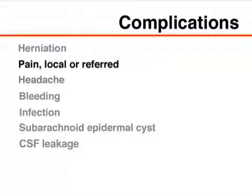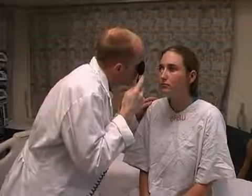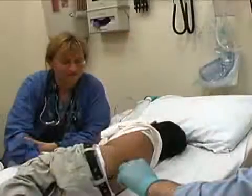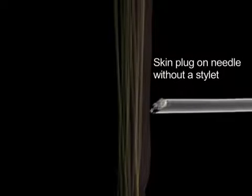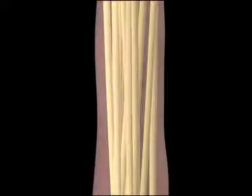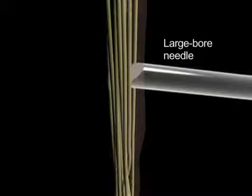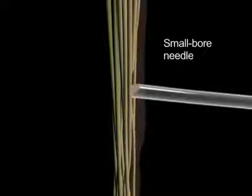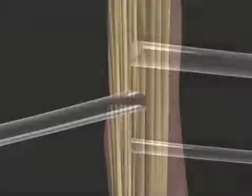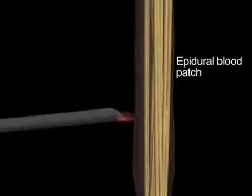Lumbar puncture has numerous possible complications, including cerebellar herniation, referred pain, headache, bleeding, infection, the formation of a subarachnoid epidermal cyst, and leakage of spinal fluid. You can avoid many of these complications by conducting a careful assessment of the patient before the procedure, including a thorough neurologic examination and retinoscopy, and monitoring the patient throughout. A subarachnoid epidermal cyst occurs when a skin plug is introduced into the subarachnoid space; the standard use of a needle with a stylet will avoid this complication. Leakage of spinal fluid can occur at the puncture site. A large-bore spinal needle is more likely than a smaller-bore needle to produce a leak, so the latter should be used whenever possible. In the case of persistent leakage, an anesthesiologist should be consulted to determine whether a blood patch is needed to occlude the leak.